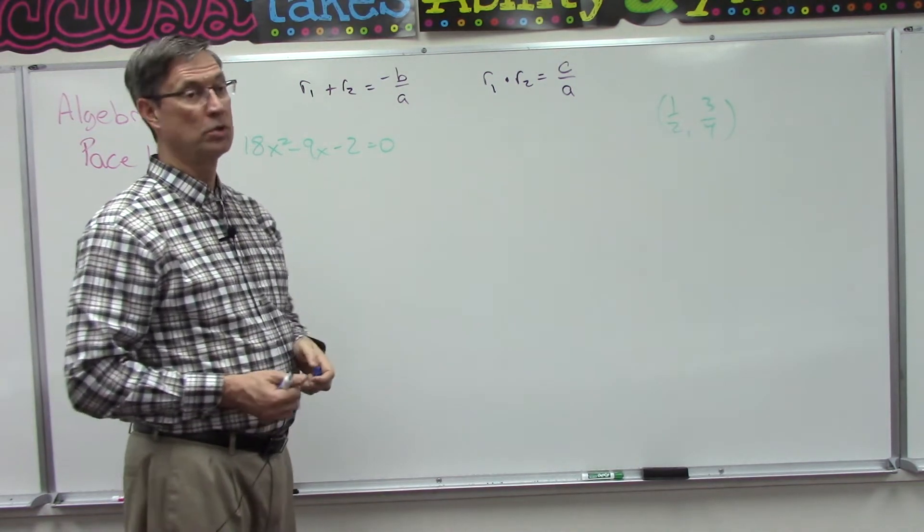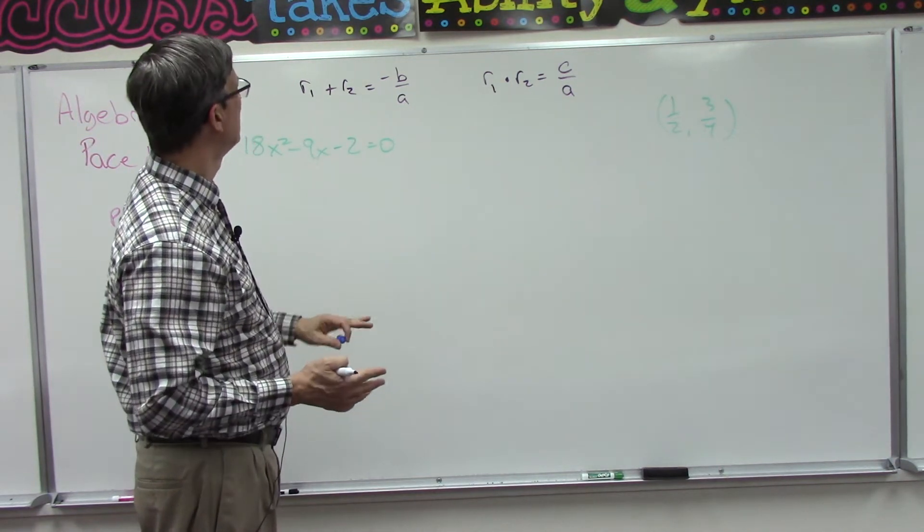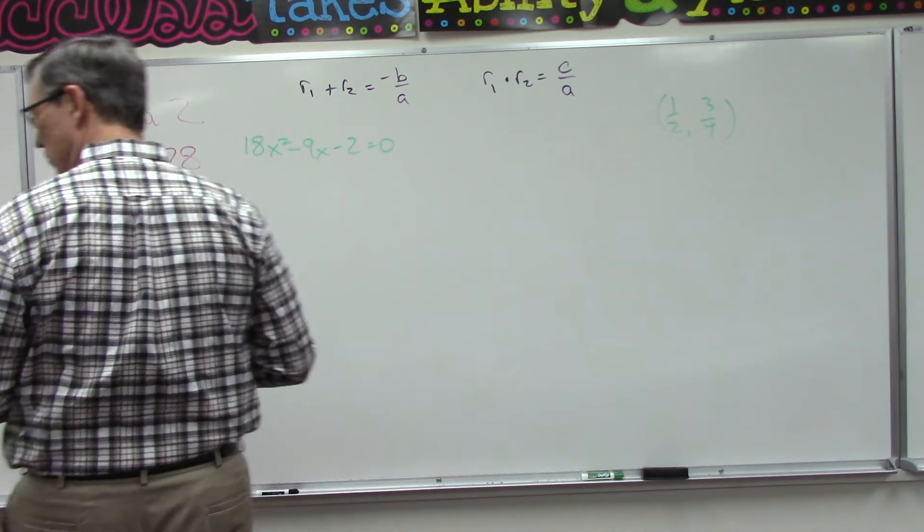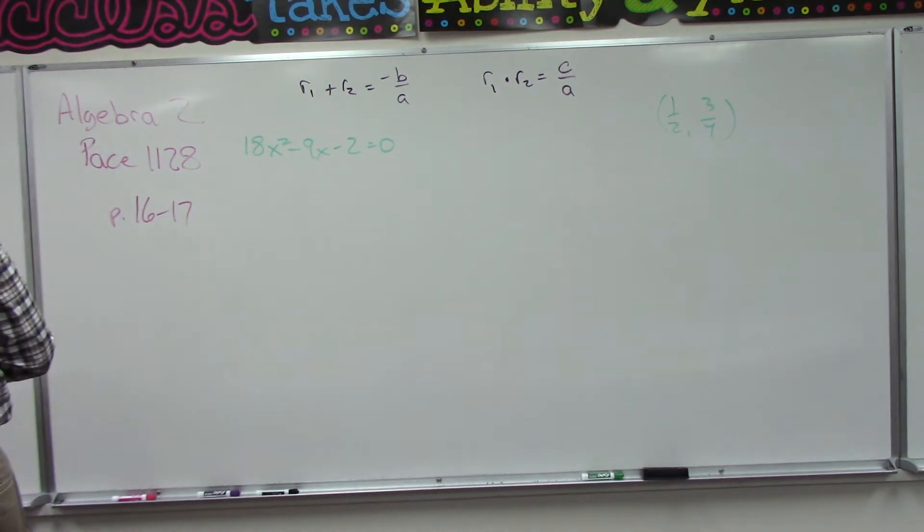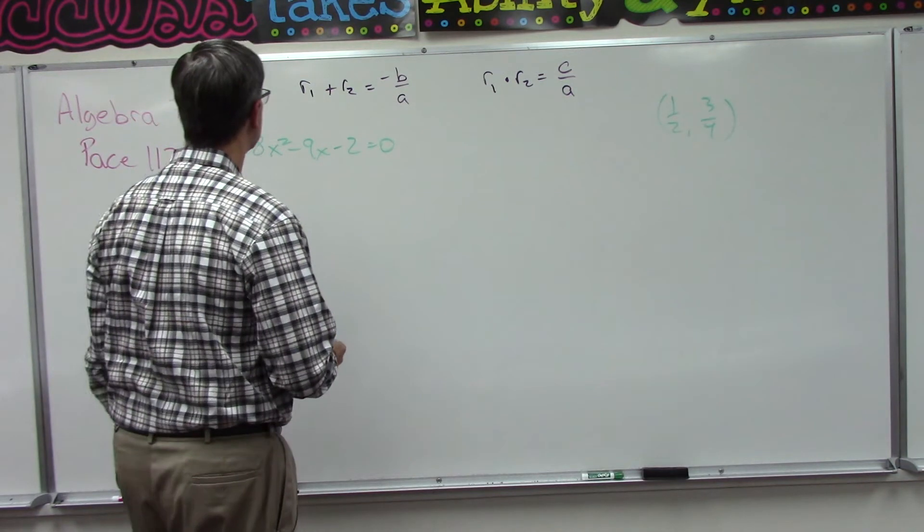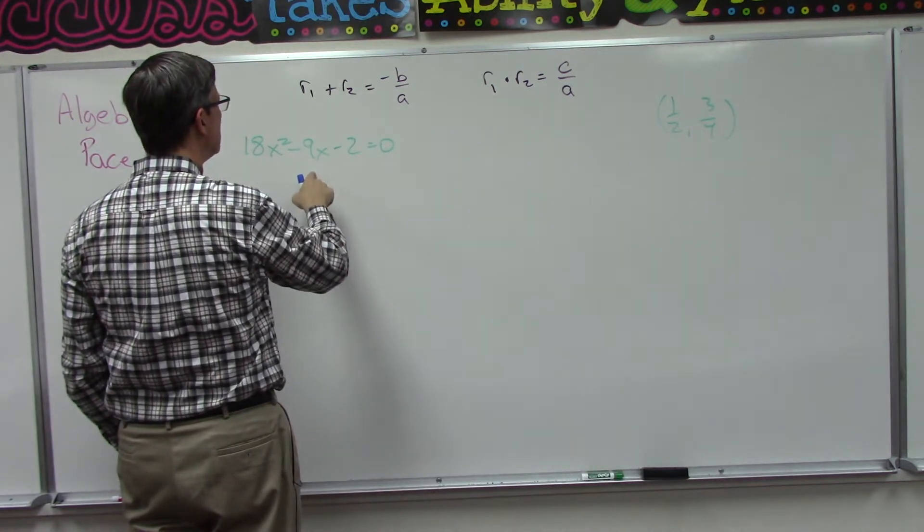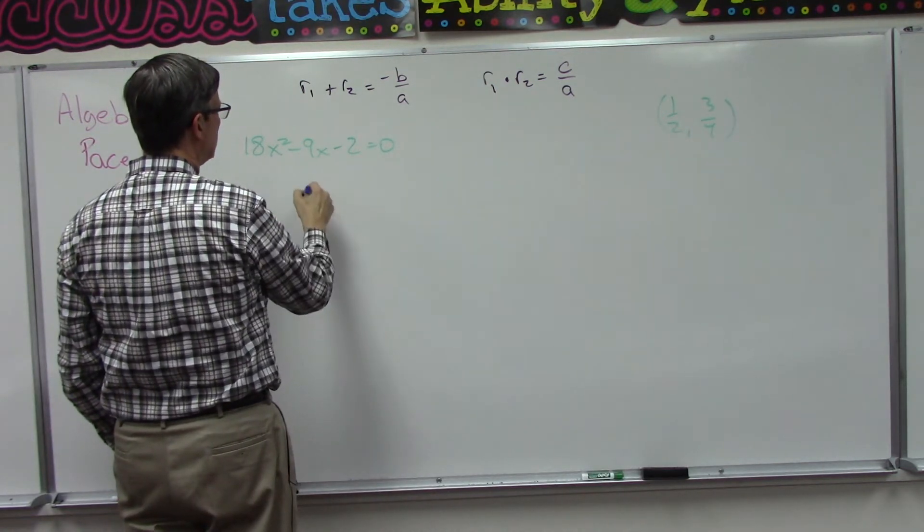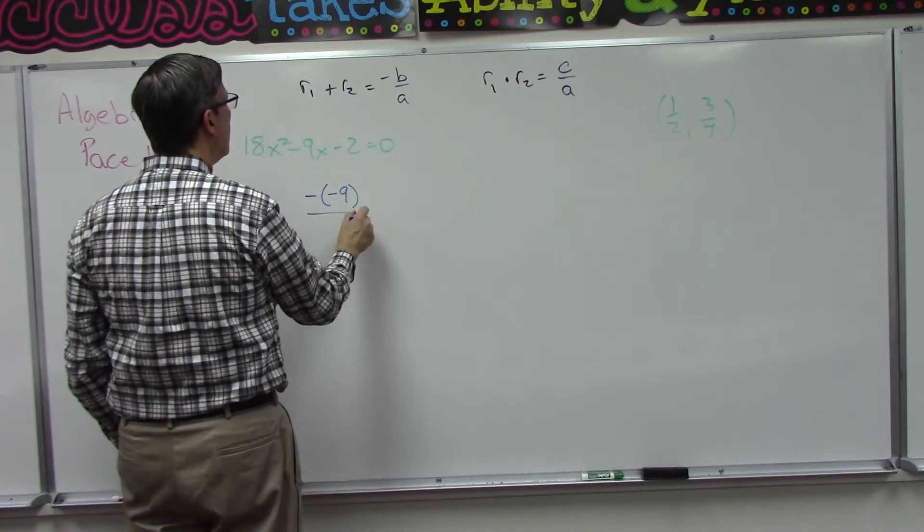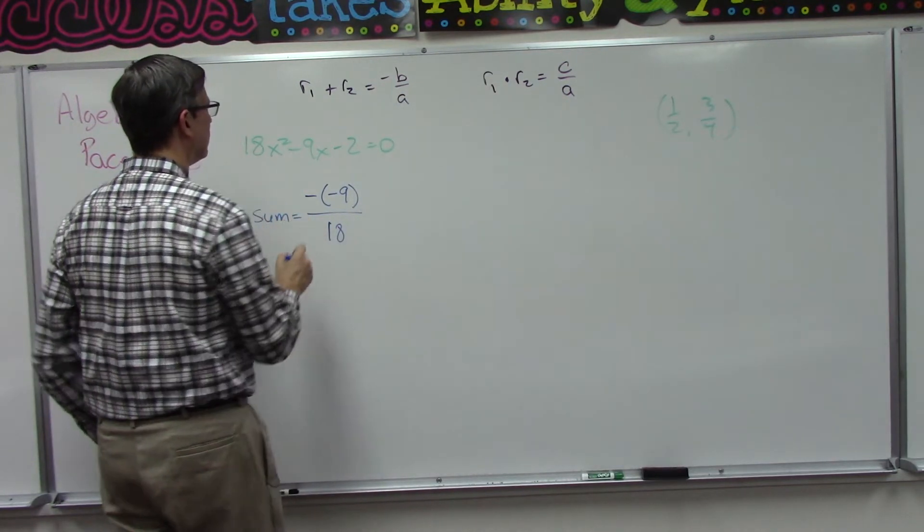But there's this little magic trick here that says we could figure out - it says find the sum and the product of the roots. Okay, so we're just going to plug in and solve. Here we go: the sum of the roots is we first take negative b. So b is negative 9, so negative of negative 9 over a, which is 18.